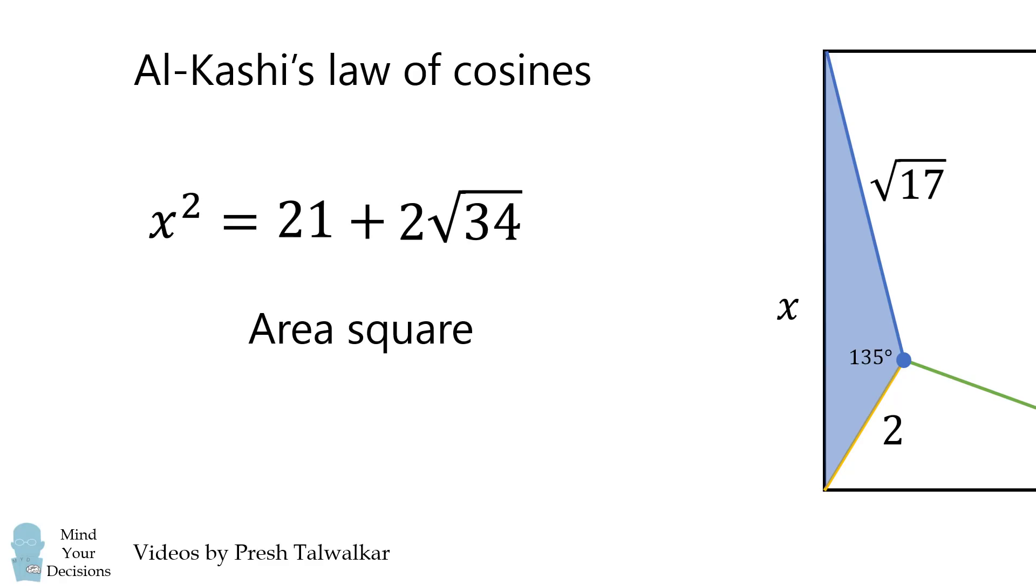Now recall we want the area of the square, and the area of the square is exactly its side length squared, which is equal to x squared. And we've already solved for that, so that's our answer. The area of the square is 21 plus 2 times the square root of 34. Incredible!